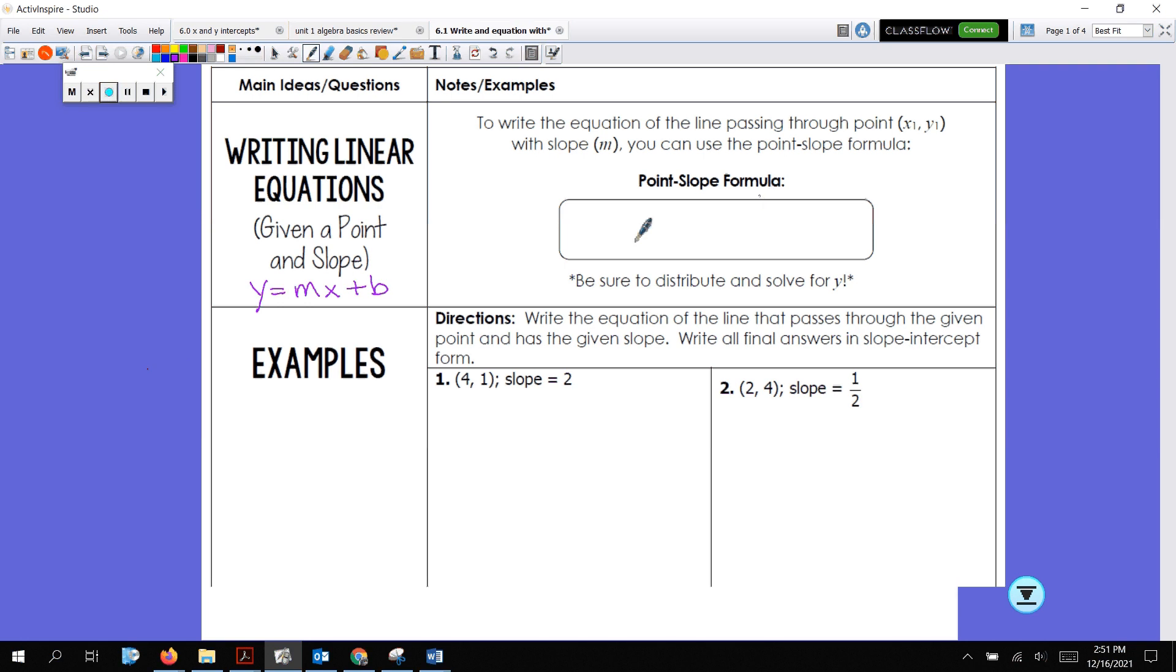Okay, so point-slope formula looks like this. y minus y1 equals m times x minus x1. Okay, remember m is the slope and the point is x1, y1. x1, y1, making it point-slope formula. Okay, you want to be sure to distribute and solve for y.